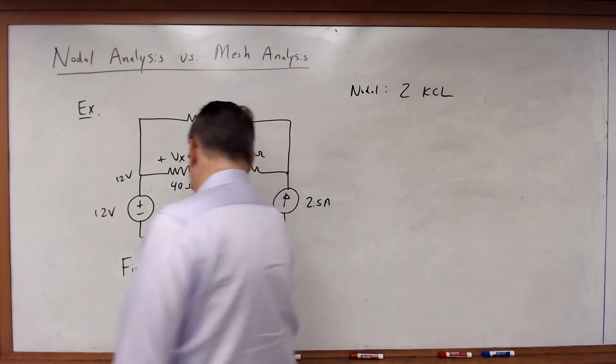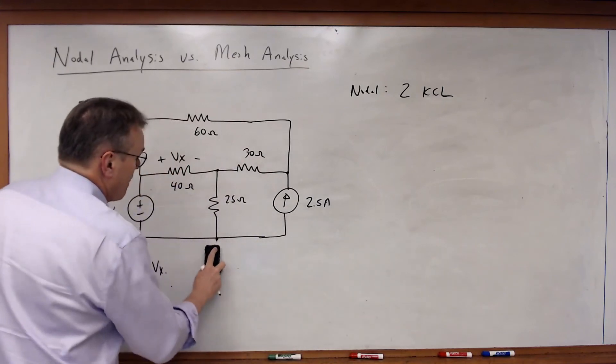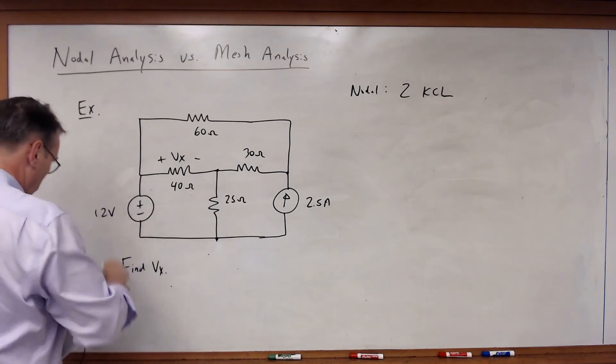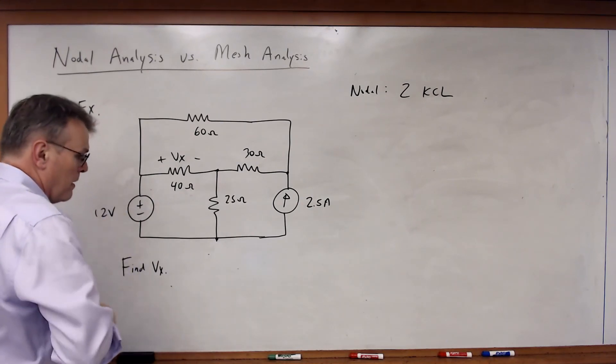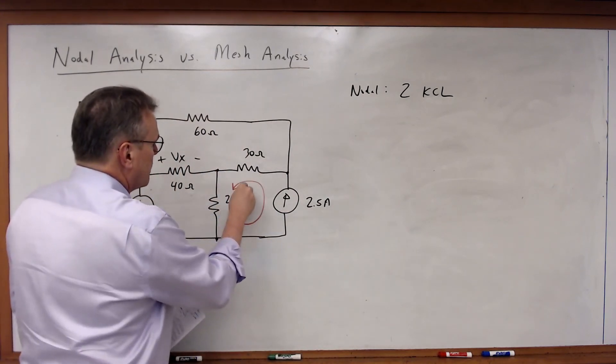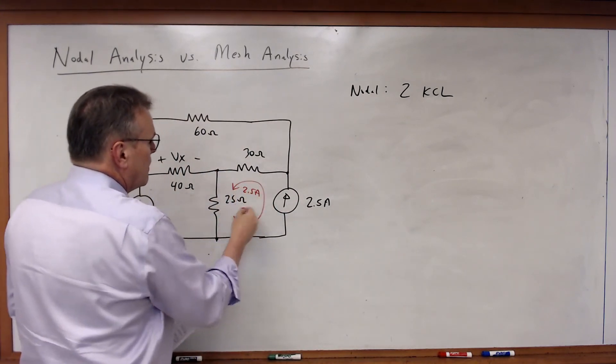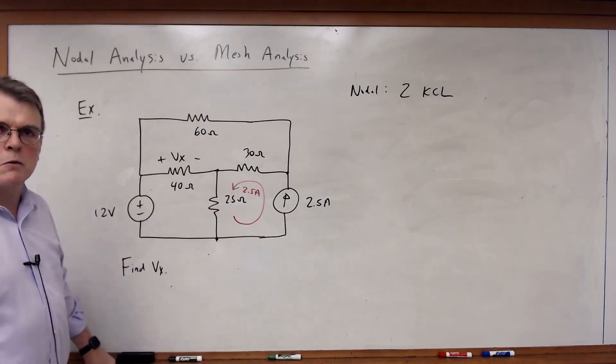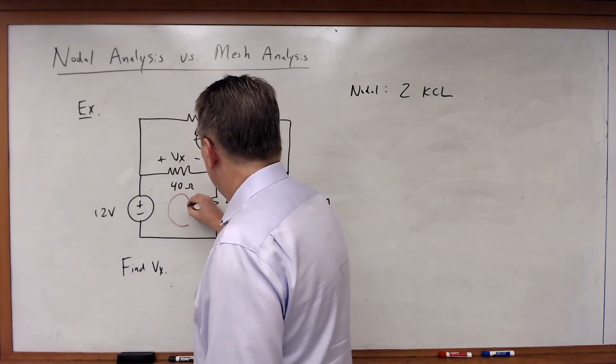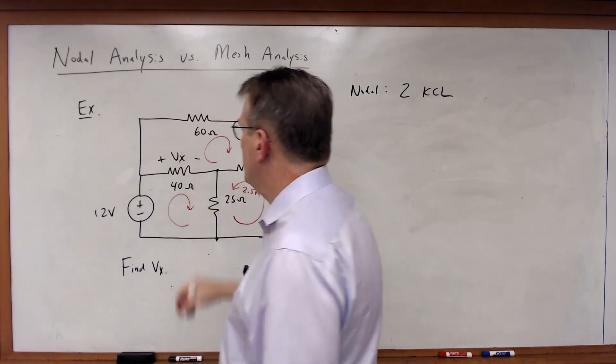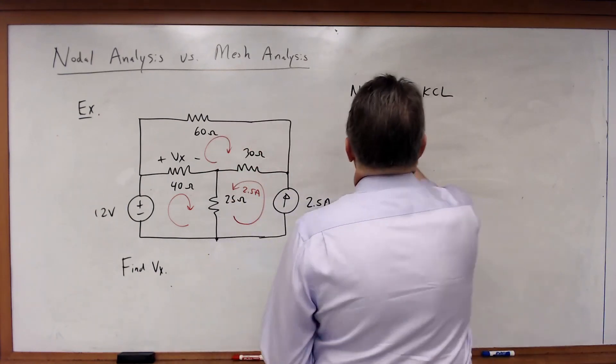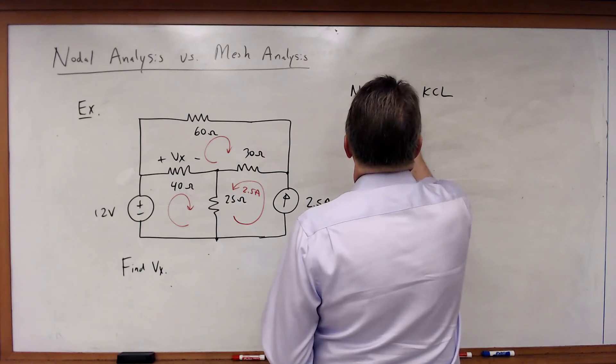What about if I did this with a mesh? Well, if I did this with mesh analysis, what would I have? Well, in this case, this mesh current is defined. That's 2.5 amps because of that current source. And in that case, I've got one, two undefined meshes. And therefore, I will have for mesh, two KVL equations.